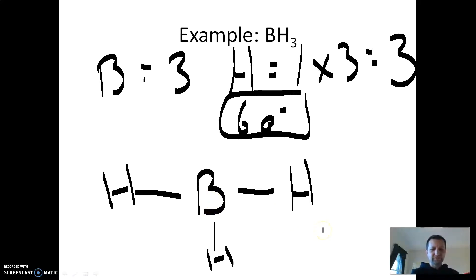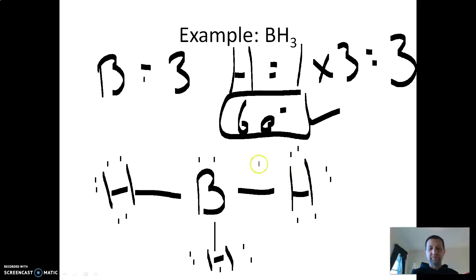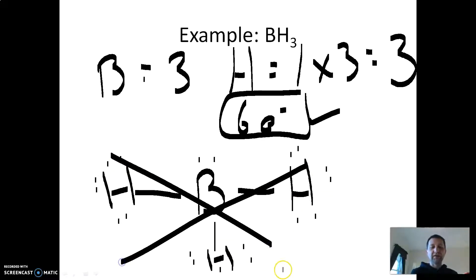Do not go lone pair happy. Students do this all the time — they just put lone pairs on everything. Everything has an octet, but I only need six electrons and now you have way too many. You want to make sure you only have the number you are allowed to have in your structure. Hydrogen will never have anything other than a single bond — keep track of your electrons. The wrong answer has all those extra lone pairs. I had the right answer just a second ago.